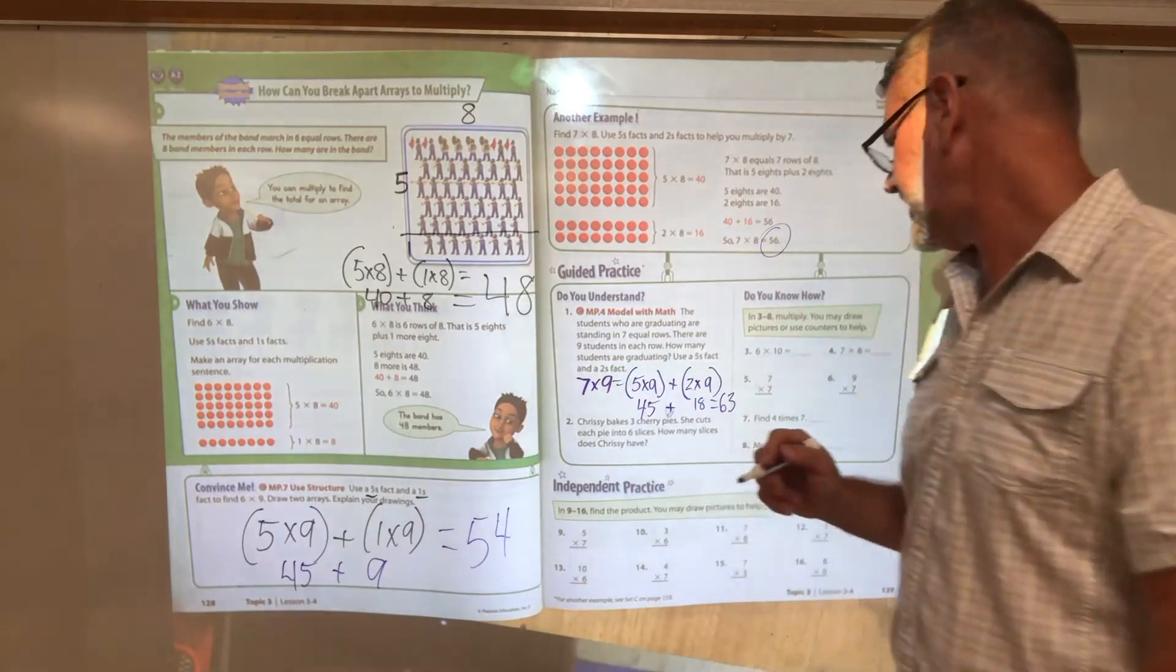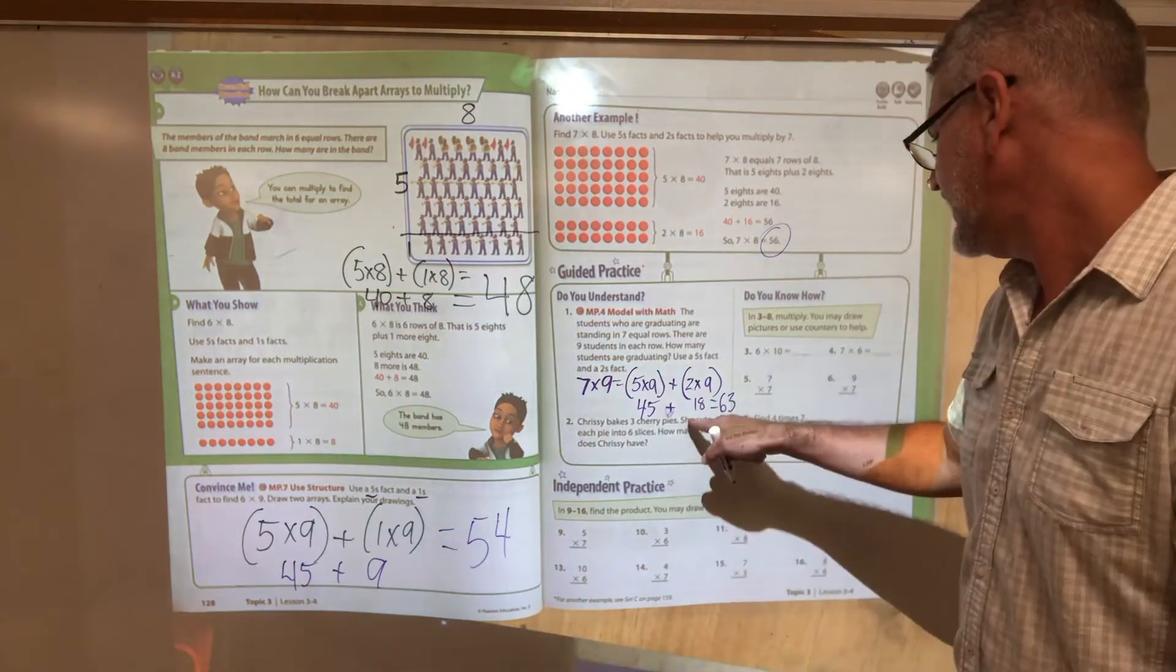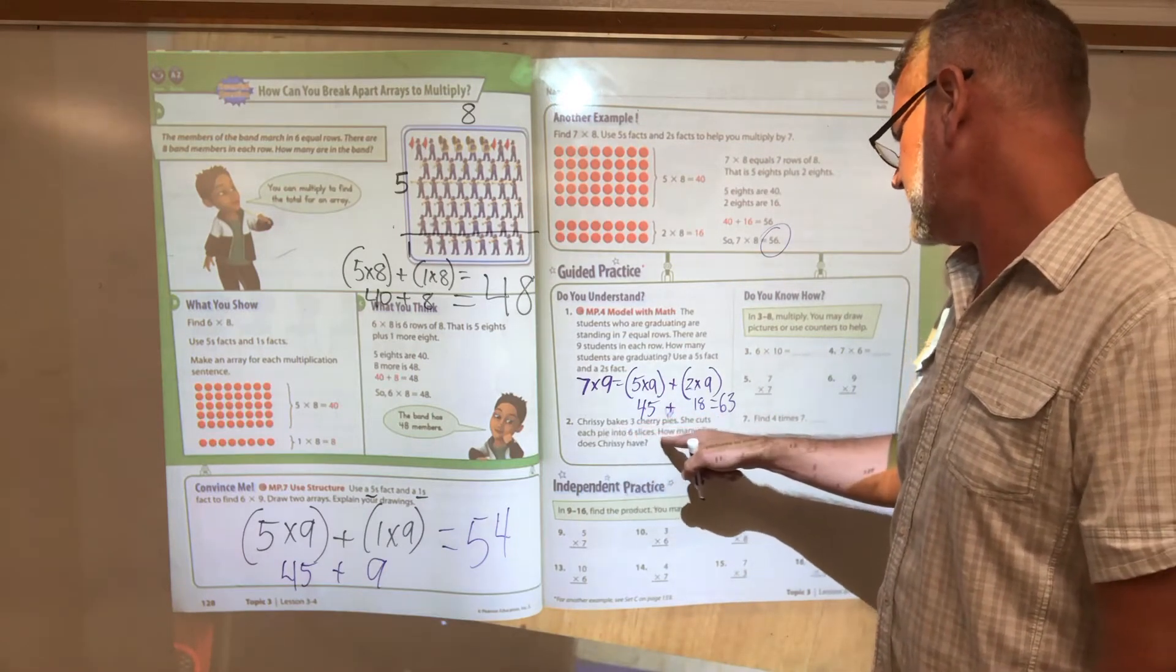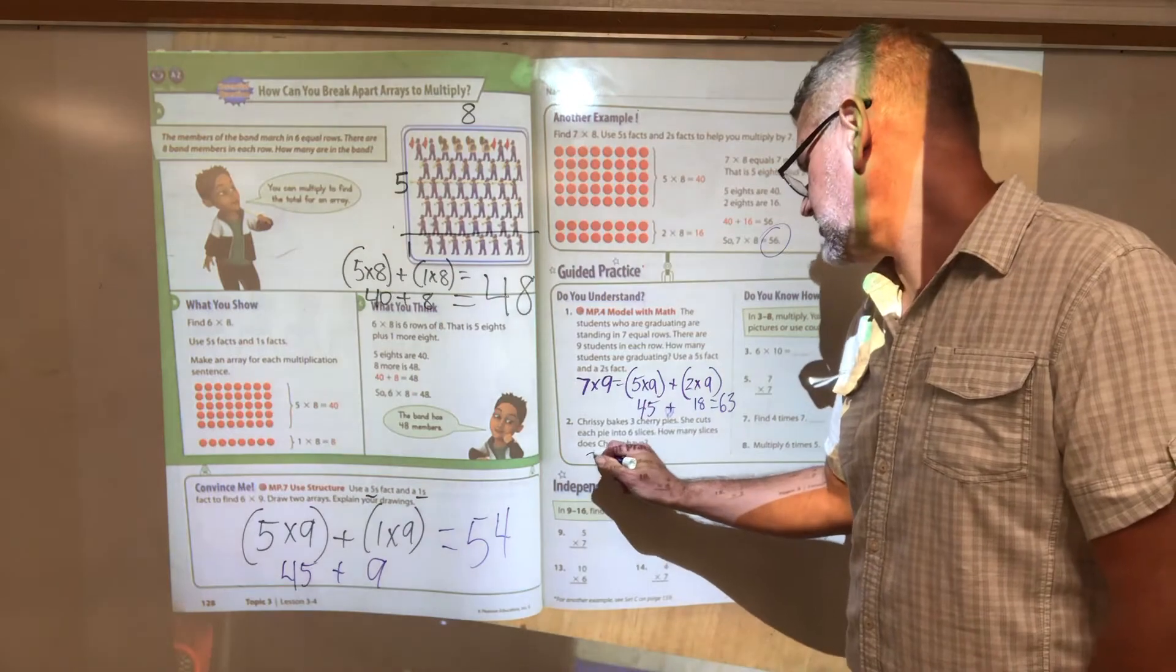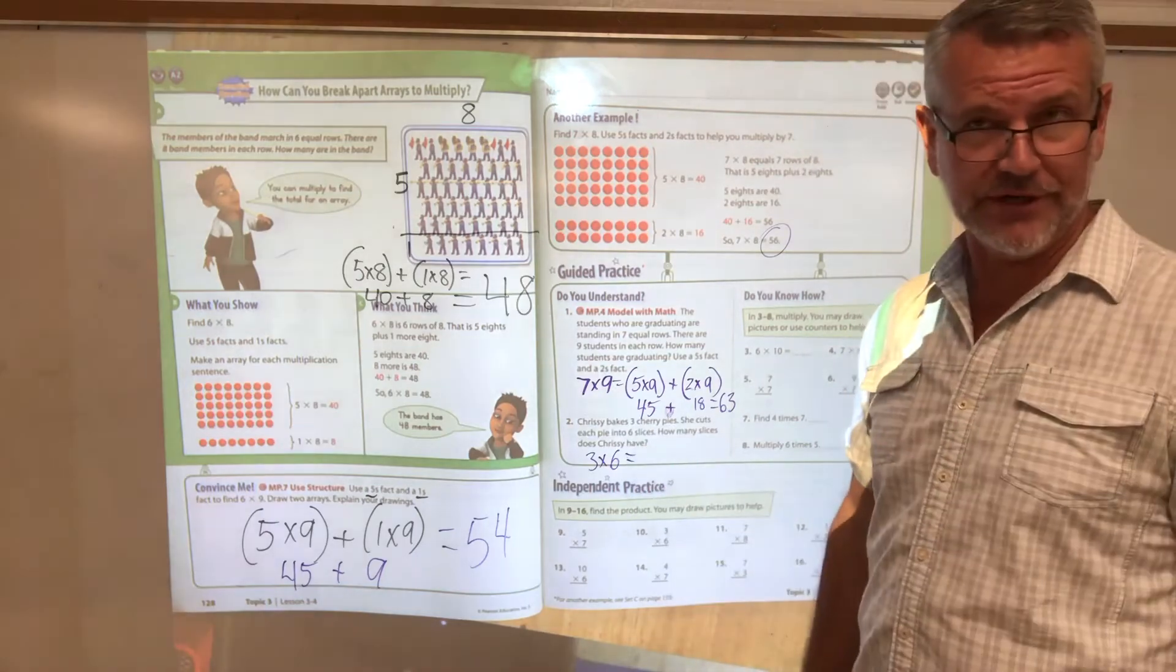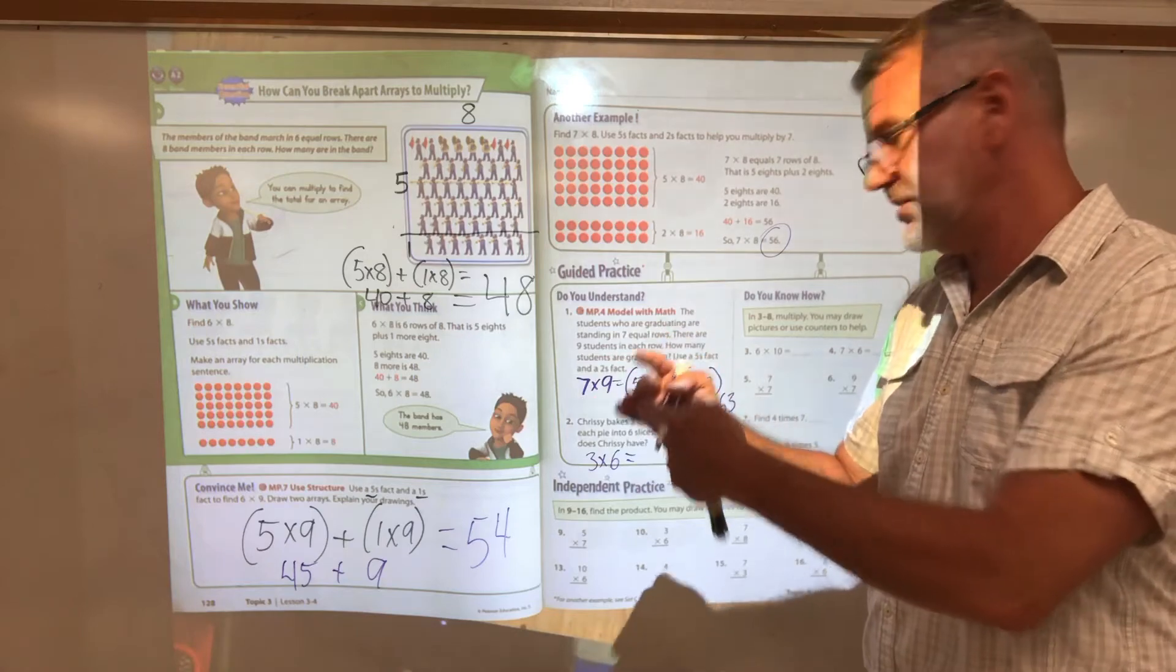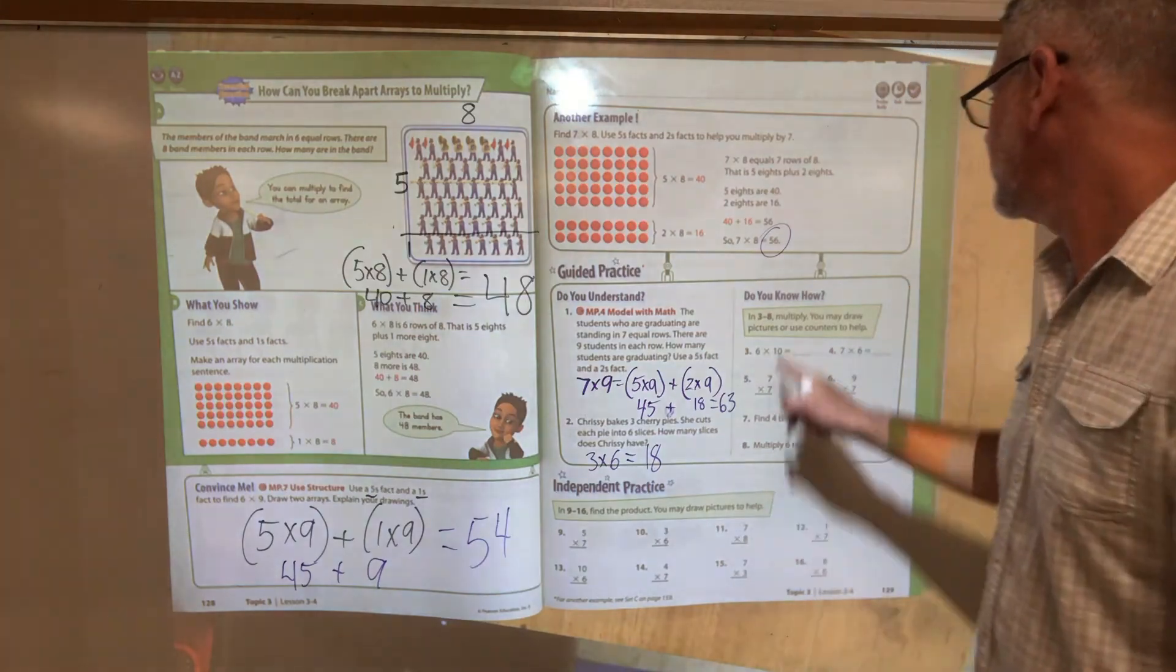Chrissy bakes three cherry pies. I love cherry pie. It's my favorite kind of... well, pumpkin's my favorite, but cherry's my second. She cuts each pie into six slices. How many slices does she have? It's three pies and there's six slices in each one. I could break that apart and say it's two groups of six plus one more group of six, or I could say it's six plus another six plus another six. However you slice it, it's eighteen.